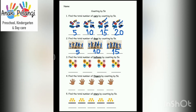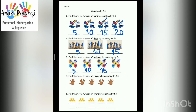Number 3. Find the total number of balloons by counting by fives. 1, 2, 3, 4, 5. Right, 5. 6, 7, 8, 9, 10. Right, 10. 11, 12, 13, 14, 15. Right, 15. 16, 17, 18, 19, 20. Right, 20.